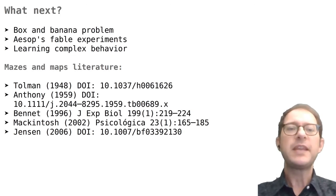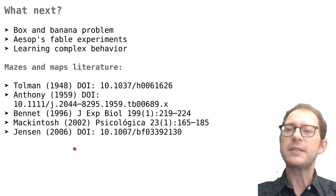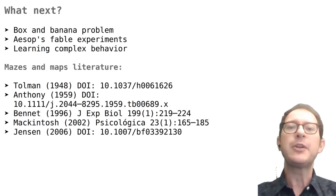This lesson is over. Here are some suggestions on what to study next. The lessons on the box and banana problems and on Aesop's Fable experiment are two more lessons on complex learning. The lesson learning complex behavior is about how associative learning may be enough to learn sequences of actions like those needed to solve a maze. If you are interested in what people have found and said in experiments with mazes and about the topic of cognitive maps, you can look at the articles indicated here. Happy learning to everyone!